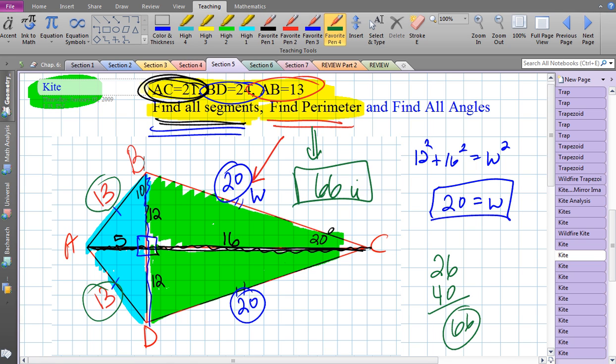So hopefully this problem showcased your skills of analyzing the triangles within the kite and discovering how we can use Pythagoras to find some segments and also using the axis of symmetry to find all the angles. I will see you soon.